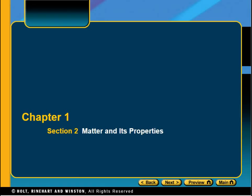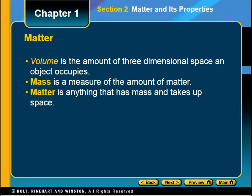This section is Chapter 1 on matter and its properties. The first set of information is matter. Matter is defined as anything that has mass and takes up space, and everything in nature is matter. Anything that you can physically see, and even the things you can't see that have both mass and space, are matter.